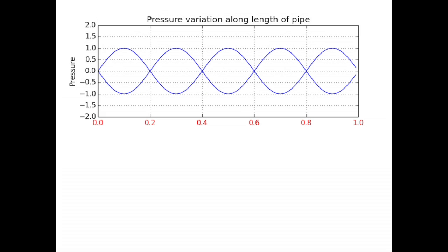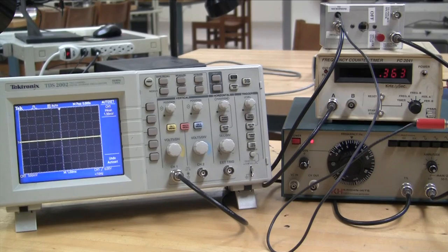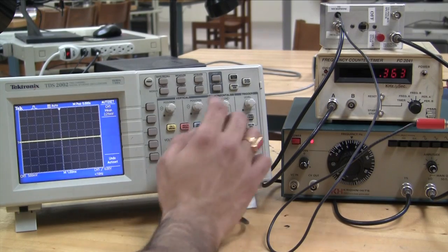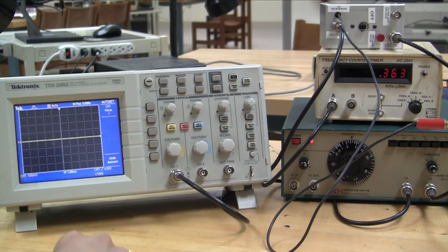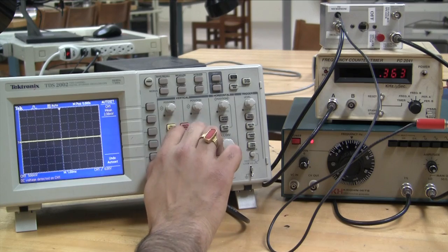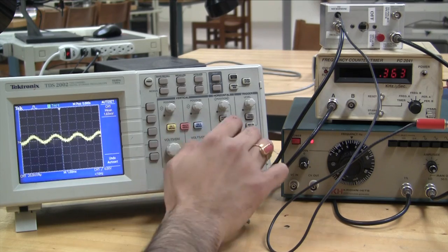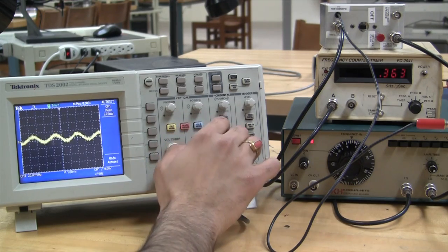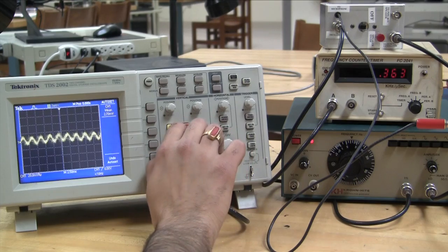To monitor the motion of the air column, we detect the pressure variations inside the pipe with the microphone. The amplitude of the microphone signal measured by the oscilloscope reflects the sound amplitude within the pipe, rather than sound coming from the speaker.